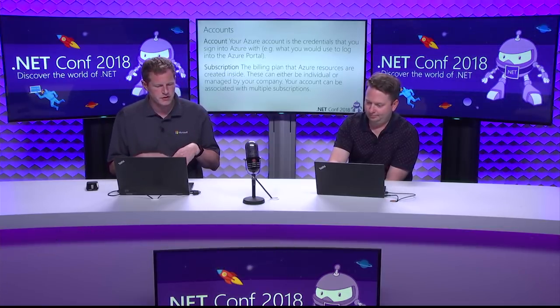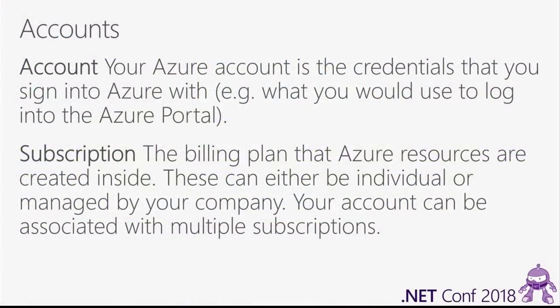Under your account, you have subscriptions — the billing plan inside which Azure resources are created. This is where the money comes from for paid resources. There are also many free resources. If you have a Visual Studio subscription, you get Azure credits every month. If those credits run out, Azure will just turn everything off — you will never get an unexpected bill.